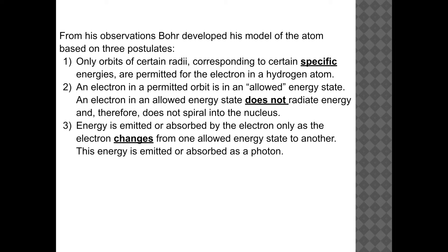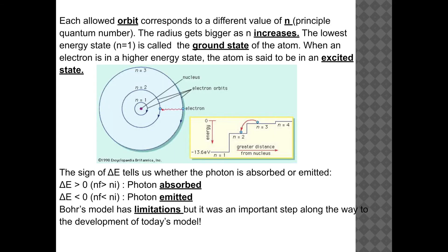From his observation, Bohr developed his model of the atom based on three things: first, only orbits of certain radii corresponding to specific energies are permitted for an electron in a hydrogen atom; second, an electron in a permitted orbit is in an allowed energy state and does not radiate energy, so it doesn't spiral into the nucleus; third, energy is emitted or absorbed as a photon only as the electron changes from one allowed energy state to another. This is Bohr's model of the atom.